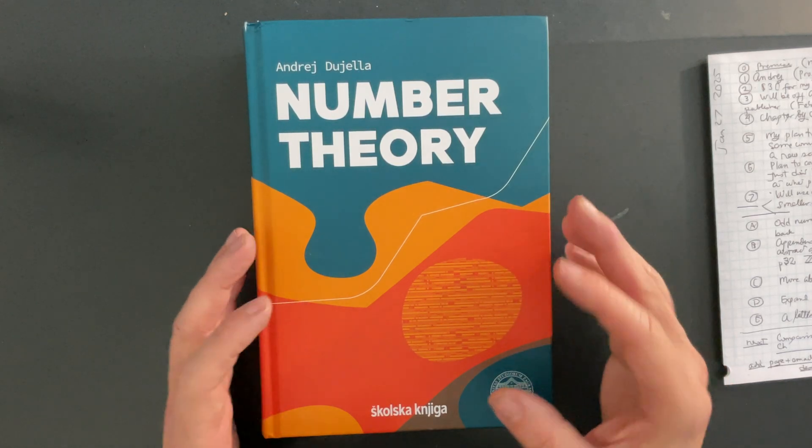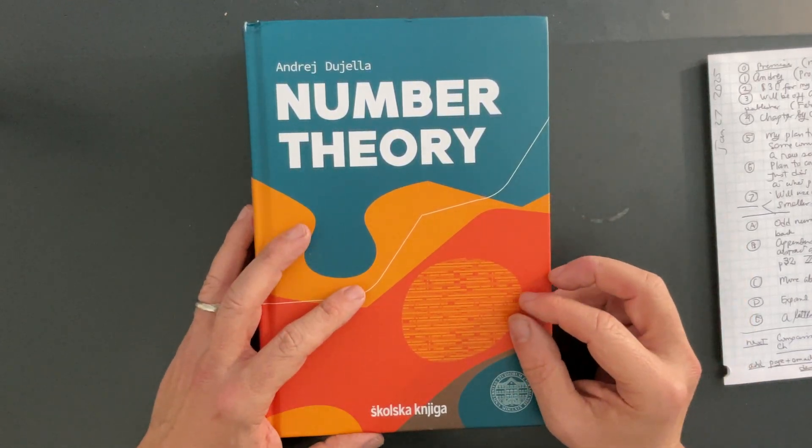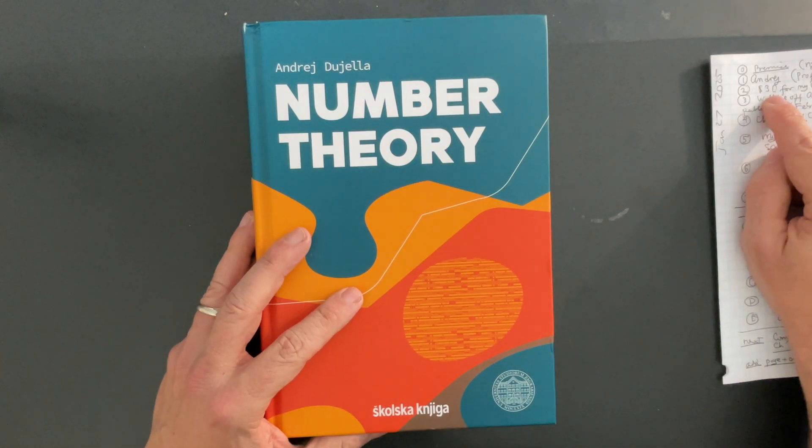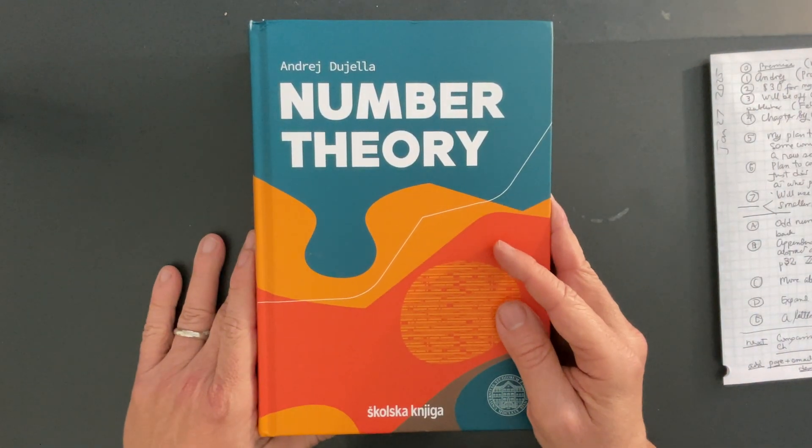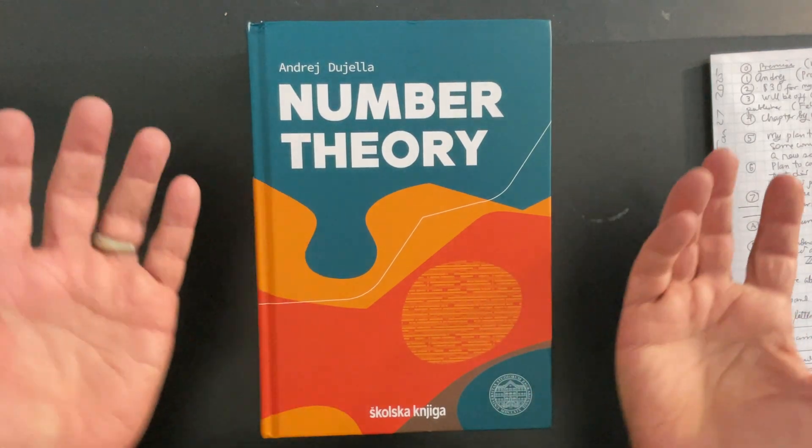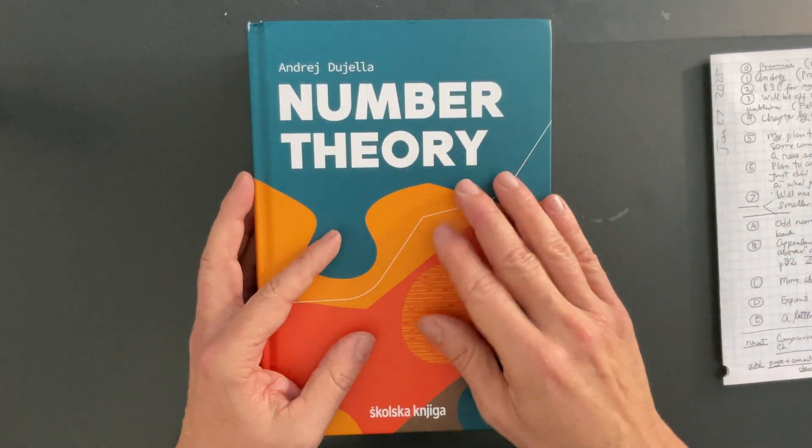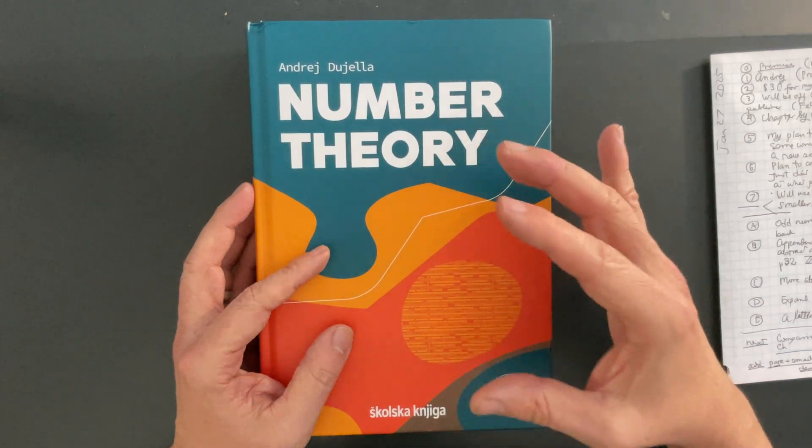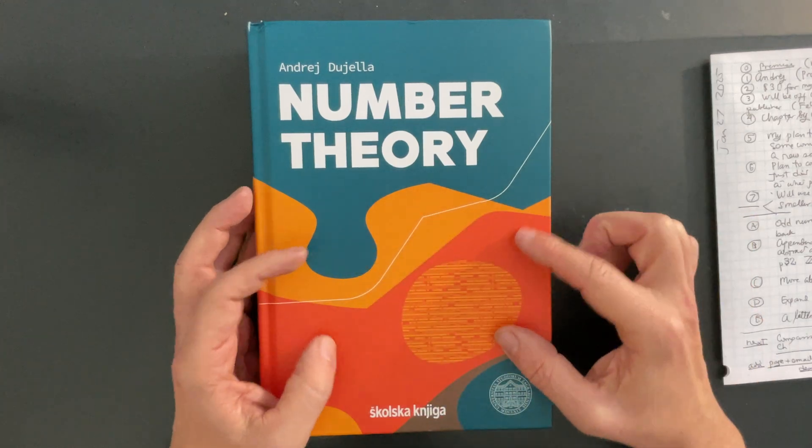You're going to see more of this book in this channel over time. I did pay $30 to the author for this copy that he mailed me. That's probably going to cover just the shipping, because the book itself is priced a little more than that. I think it's something like 50 euros. I'll put links in the description.